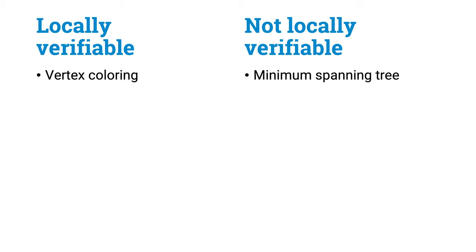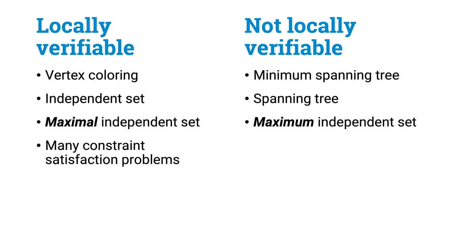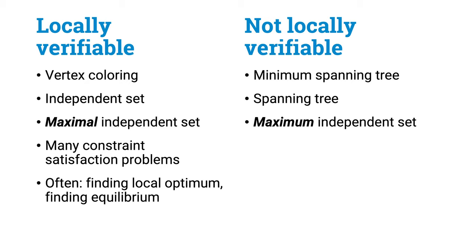Of course, not all problems are locally verifiable. For example, a minimum spanning tree is not locally verifiable — you can't even verify that a set of edges is a spanning tree if you only look at local neighborhoods. An independent set is locally verifiable: just ensure a node with label 1 doesn't have any adjacent node with label 1. A maximal independent set is also locally verifiable: you also check that for each zero there is at least one node with label 1 next to it. However, a maximum independent set is not locally verifiable.